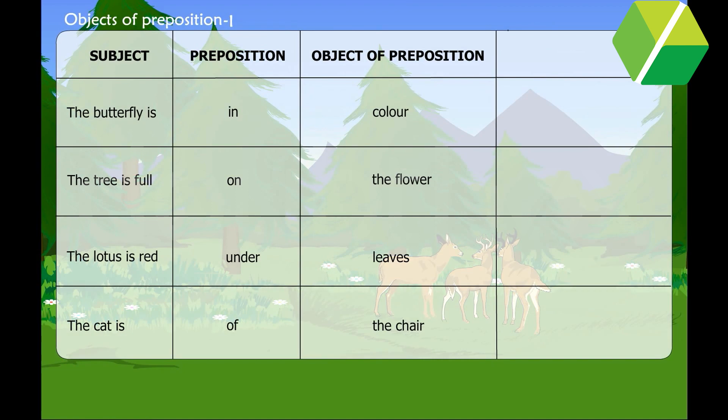Subject, preposition, object of preposition. The butterfly is on the flower. The tree is full of leaves.